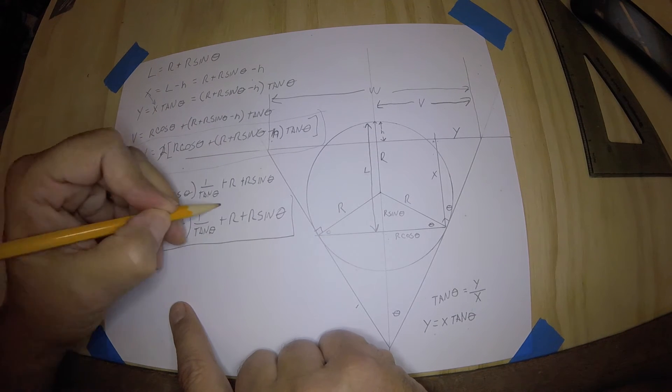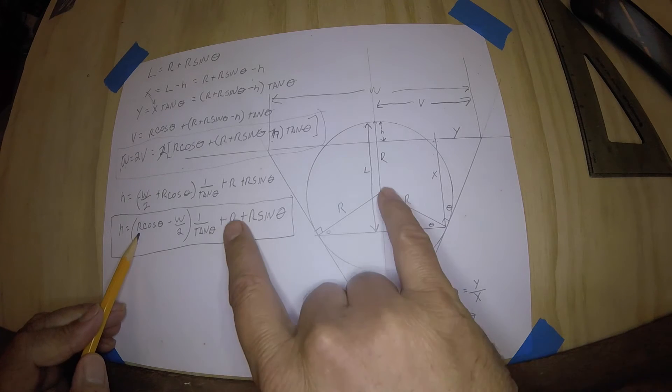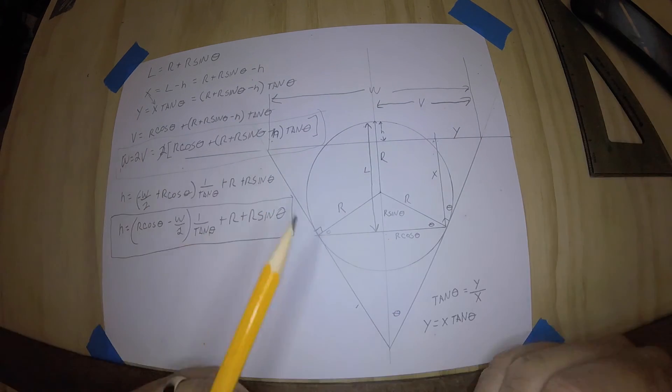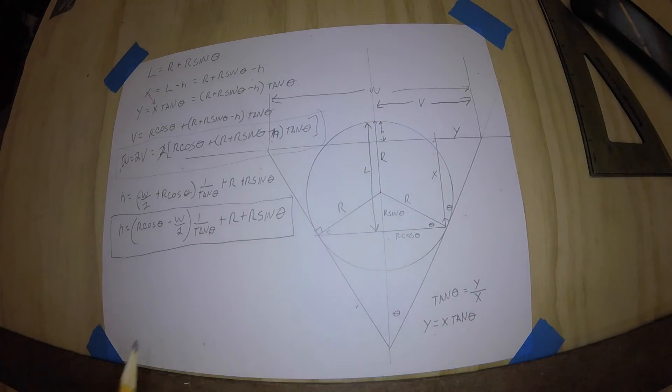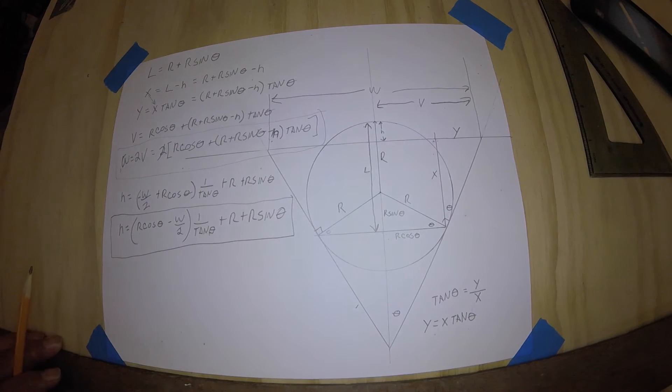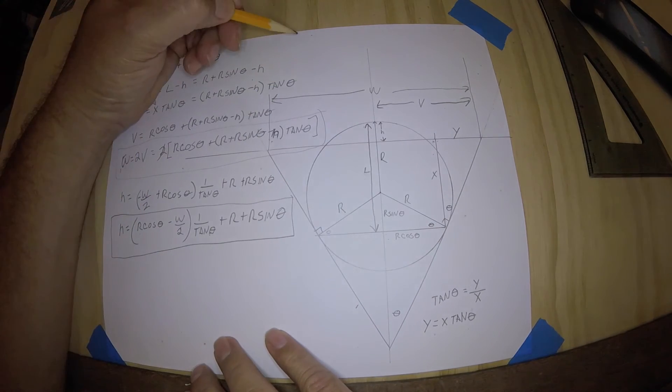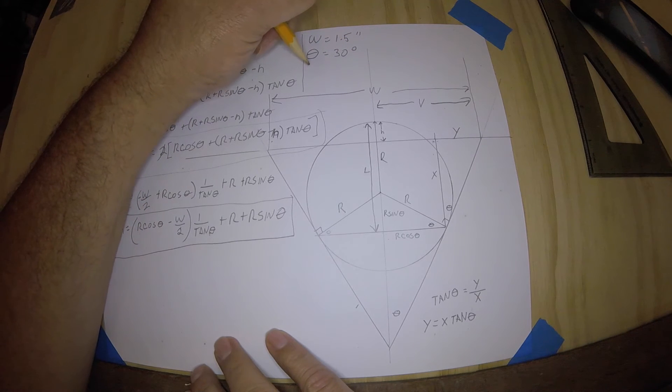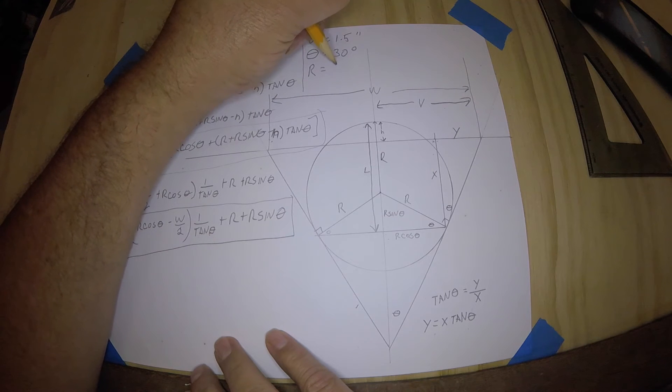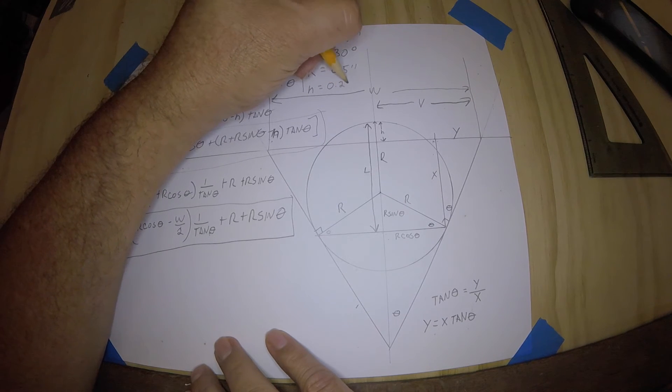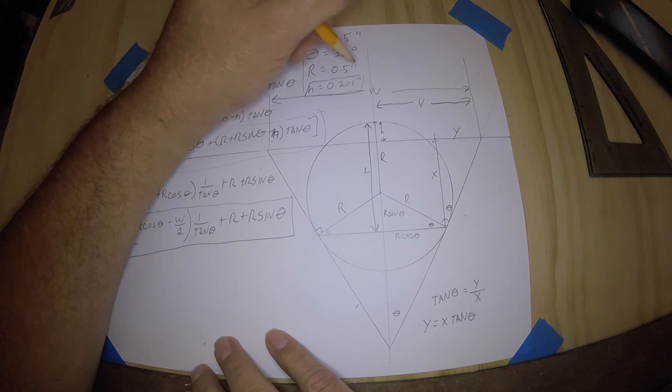This equation will give you H for any size R, any size W, assuming that the diameter of the ball is less than the W, and any angle, you know, angle where a taper would be. It's not going to be 180 degrees or down this way. So, you know, a standard taper with a ball in there that would sit in there. So let's give it a try for the example. The example that was given, oh heck, I'll write it up here. The width was equal to 1.5 inches. Theta was equal to 30 degrees. The radius was equal to 0.5 inches. And the height, I believe, was equal to 0.201. That's the result we're trying to get when we plug the rest of this in.